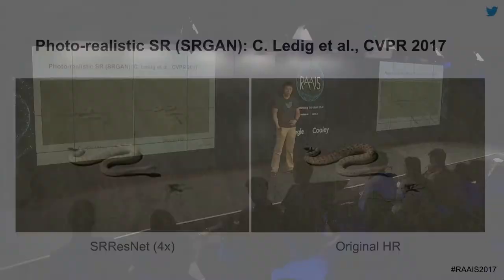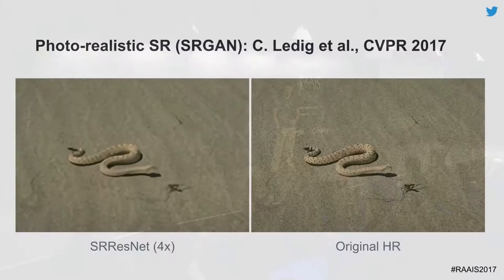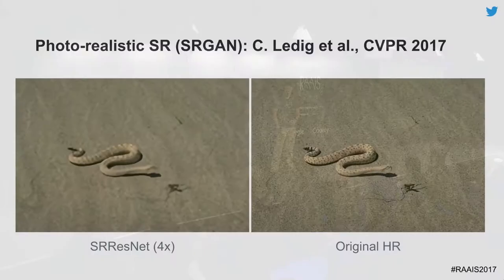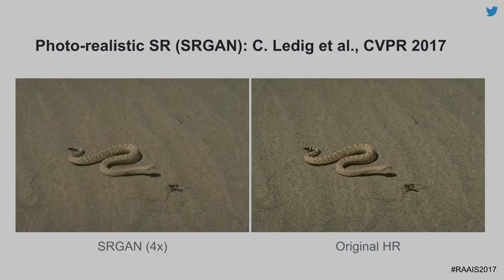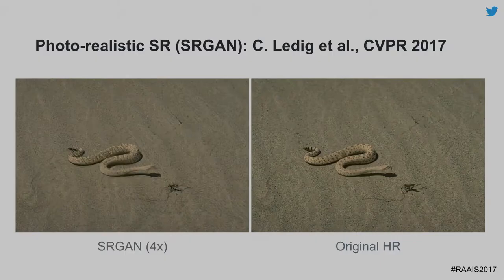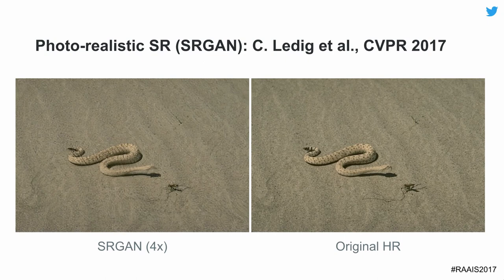Here's another example with the snake. A standard super-resolution network does a better job than what already exists in low resolution, but doesn't reconstruct what might be in the high resolution. When we use the SRGAN approach, it adds all this extra detail, which may not be exactly what's in the high resolution, but from the perspective of what we're trying to achieve with video compression and delivery, we're achieving that high-fidelity result.